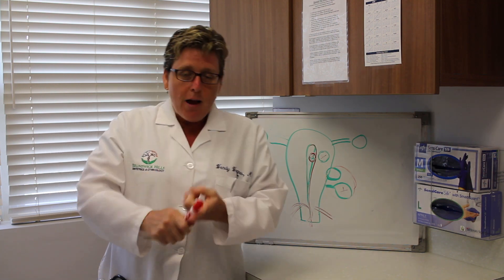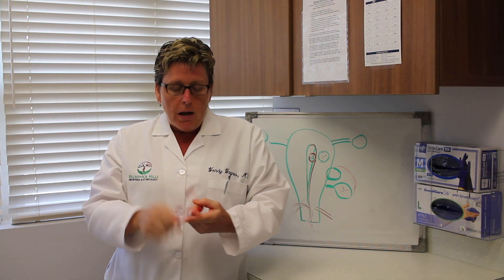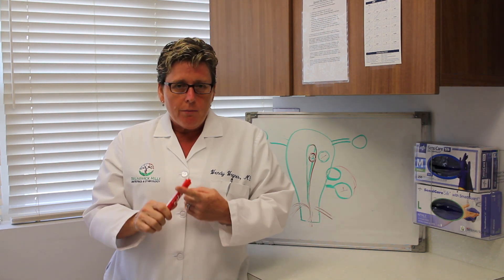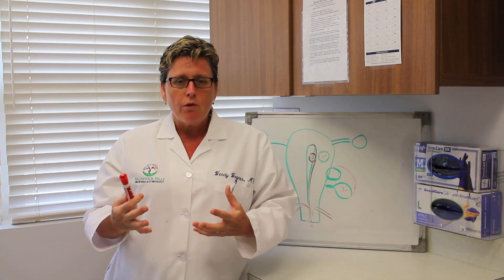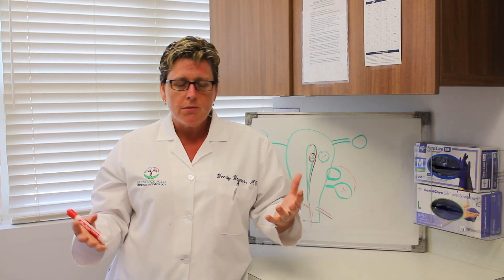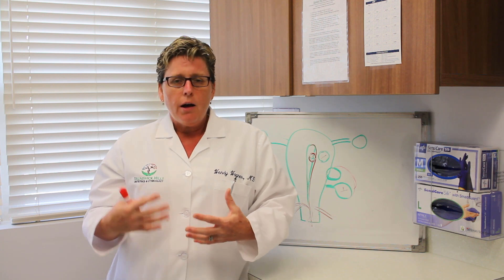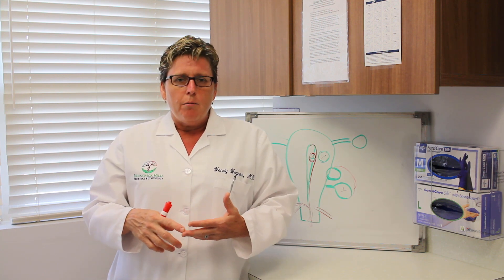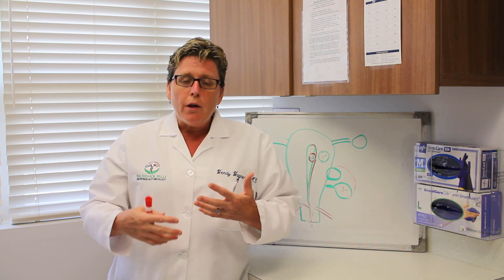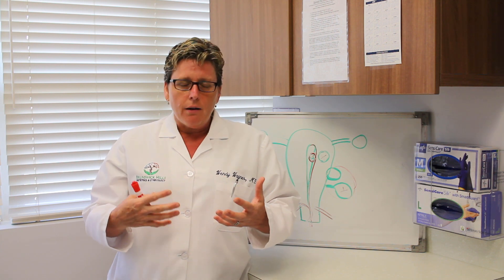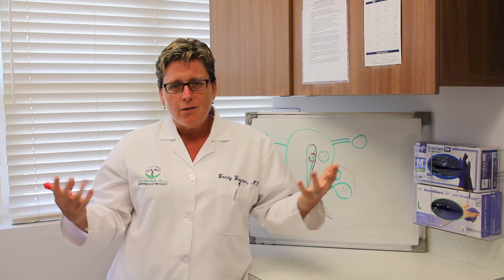Basically to recap, fibroid, they are benign growths of the body of the uterus, the muscular portion of the uterus. They are absolutely nothing to worry about unless they cause symptoms, most common symptoms, abnormal bleeding and pressure on other organs. They are diagnosed with ultrasound and history and sometimes MRIs, and next video we will see how we deal with these things.